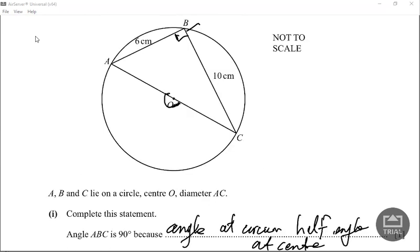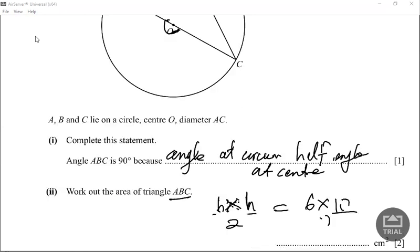So this right here would be height, and divide by two. 6 times 10 is 60. So 6 times 10 would be 60 and divide by two, so that would be 30 centimeters squared for the answer.